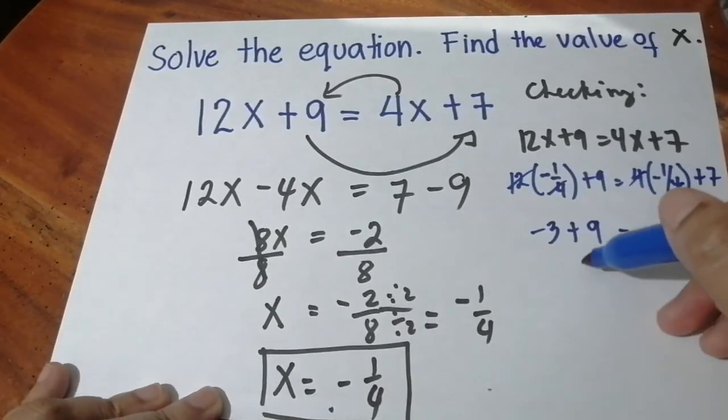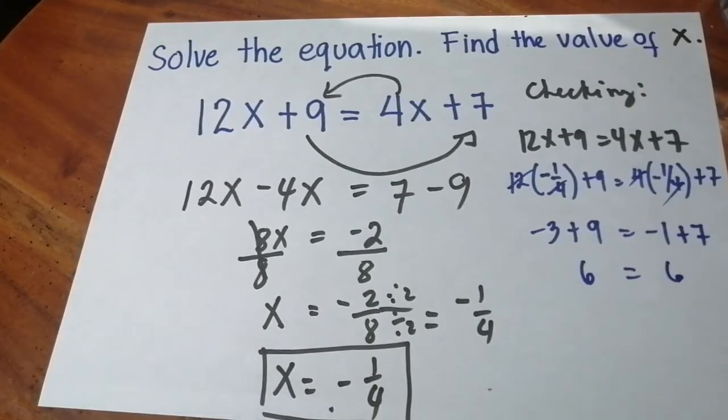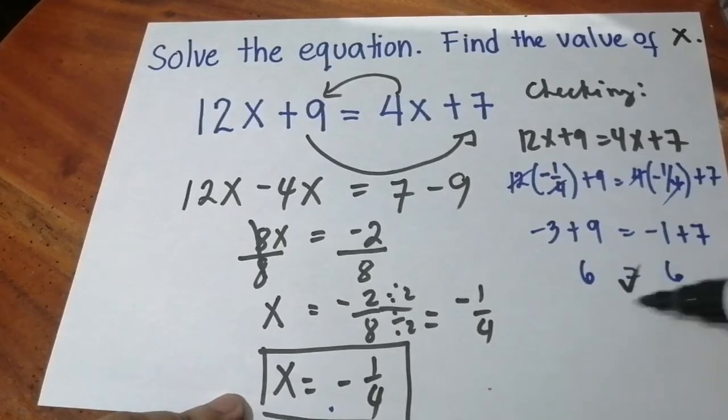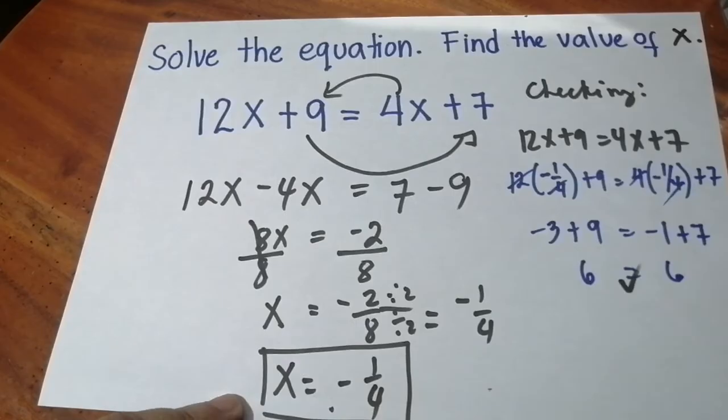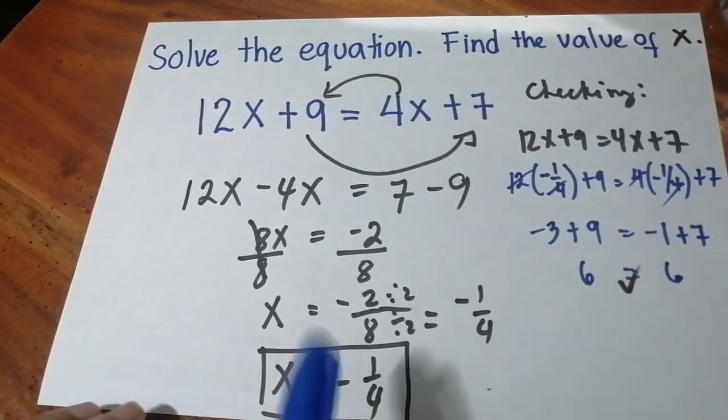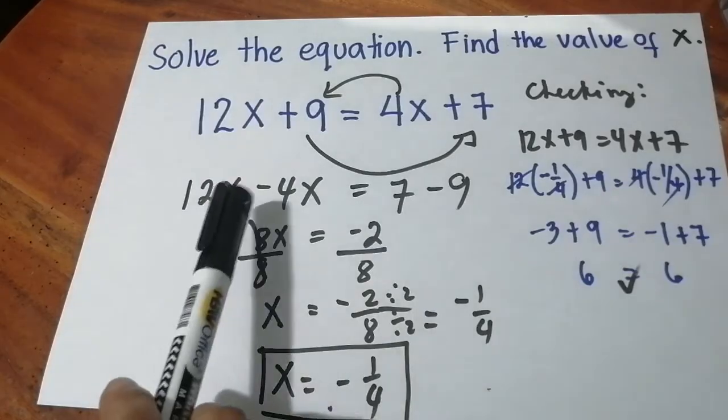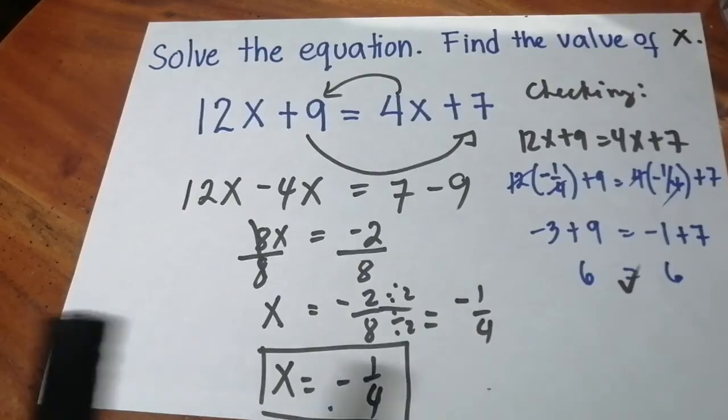Negative 3 plus 9 is 6, and negative 1 plus 7 is 6. Since we get the same answer on both sides, 6 and 6, the x value of negative 1/4 is correct. That's how we solve linear equations when the x is located on both sides.